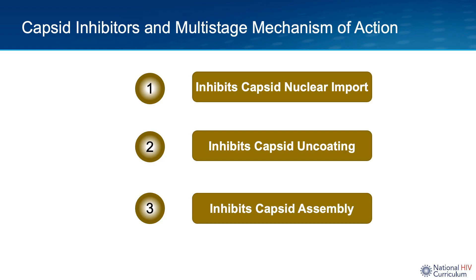In summary, the HIV capsid inhibitors have a highly unique multi-stage mechanism of action that includes inhibition of capsid nuclear import, inhibition of capsid uncoating, and inhibition of capsid assembly. I hope this mini lecture has provided you with a better understanding of the complex mechanism of action for this new antiretroviral medication class.